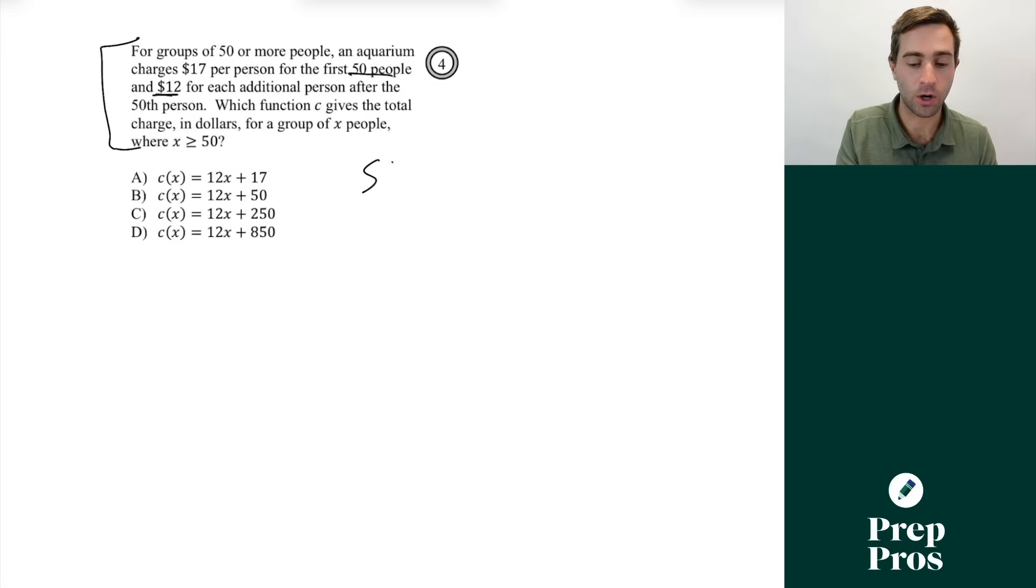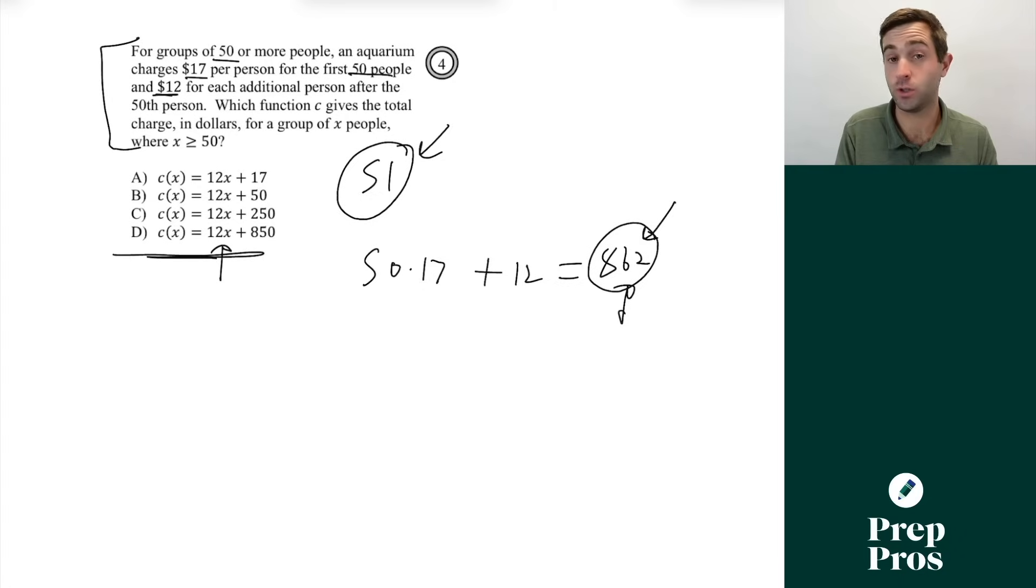Well we know for the first 50 people it's going to be $17 per person. So that's going to give us 50 times 17 and then it's $12 for each additional person so we're just going to add 12 to that. Now the reason we're doing this is we don't want to look at how the SAT is writing the answers because they're intentionally going to write them to try to trip you up. This ends up equaling $862. We want to plug values in and we essentially can fact check this. The wrong answer that almost every student picks is D but if you plugged in 51 for x here which is what we have to do this definitely is not going to give us $862 which we know is the correct value we have to pay when we basically use 51 people.